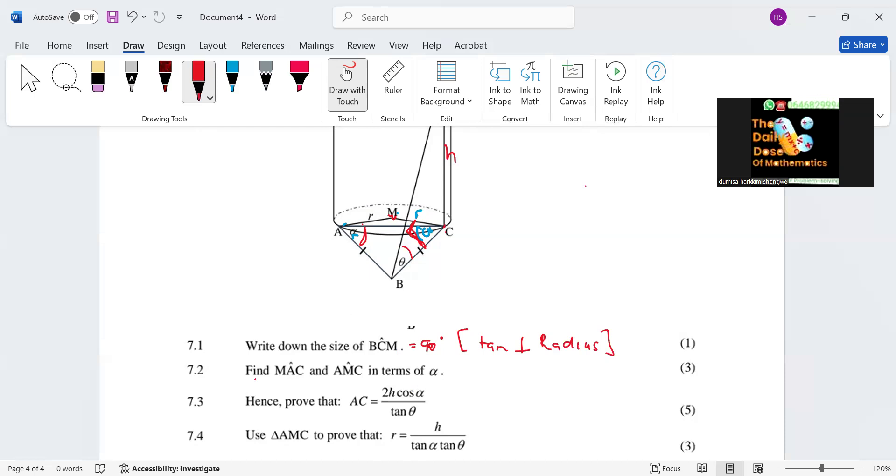And then we have find angle MAC, which is this angle here, the small one here, this piece here. And then we should also find triangle AMC which is this one here. Let's start with MAC. MAC is going to be 90 degrees because we already told them this angle BMC.